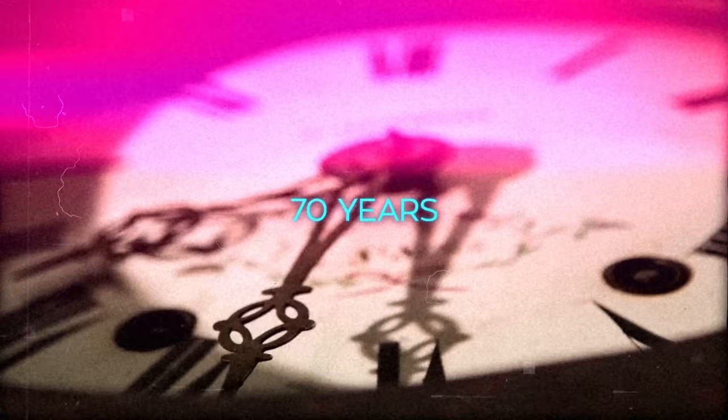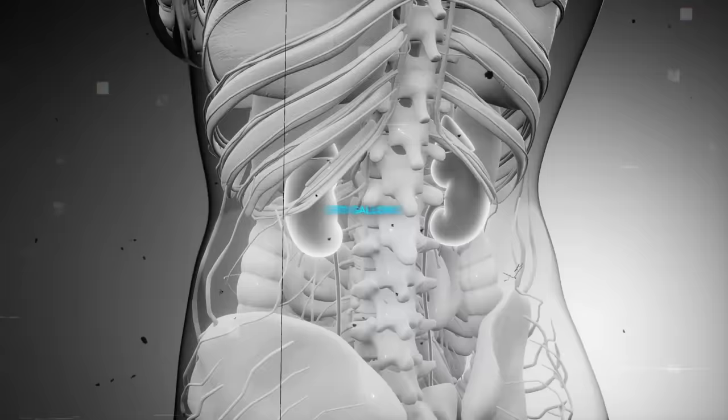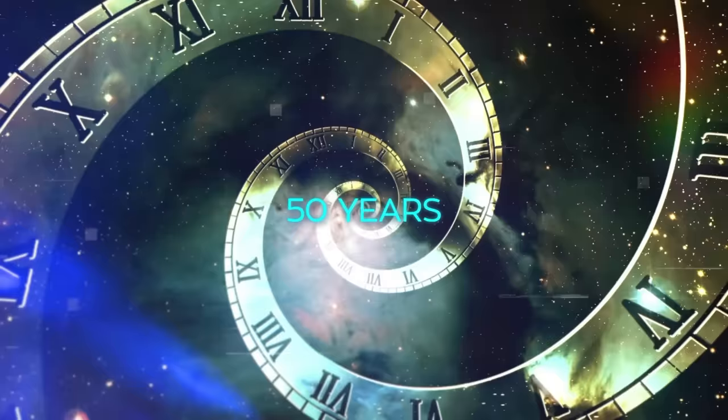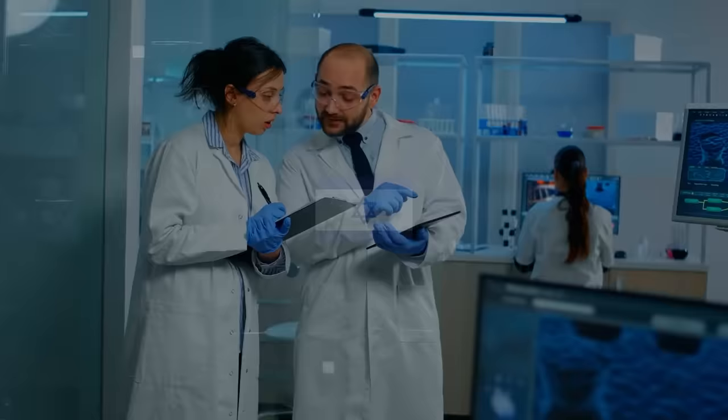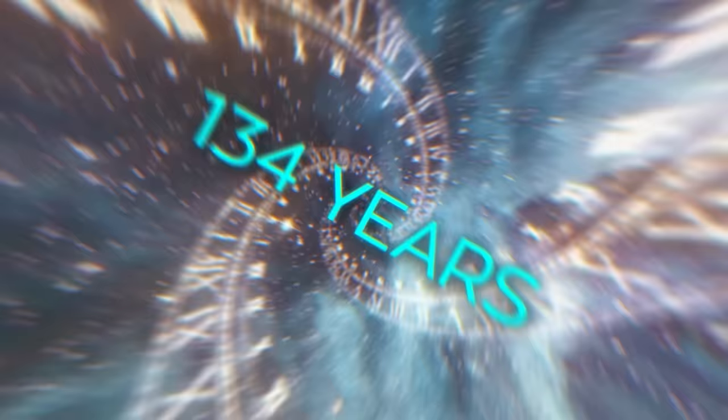It took 70 years for scientists to isolate erythropoietin by filtering through 670 gallons of urine. Fast forward about 50 years, and researchers in Israel identified a unique kidney cell responsible for producing this hormone when there's a shortage of oxygen. They named it the Norn cell, after the Norse gods thought to determine human destiny. It took humanity 134 years to uncover the Norn cells.